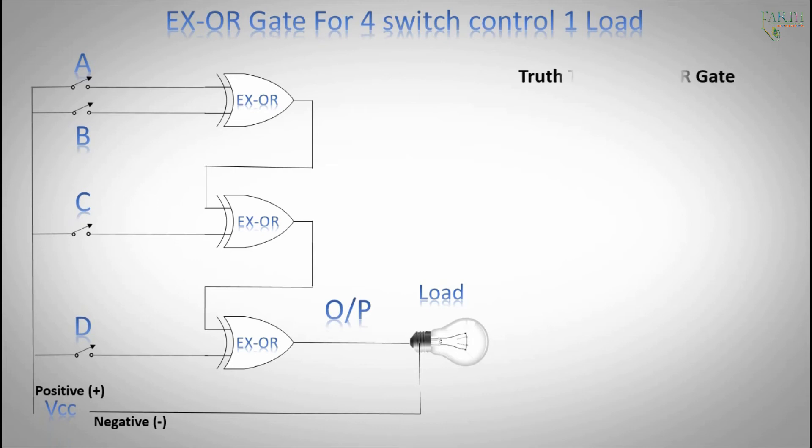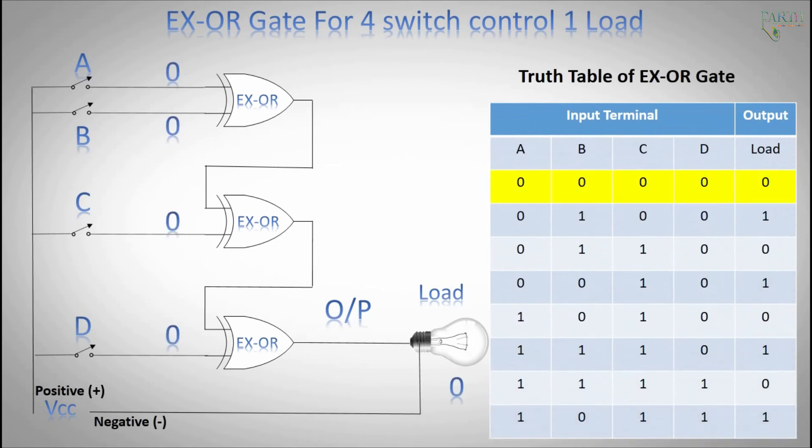Truth table of XOR gate. Input A, B, C, D signal 0, output is 0.